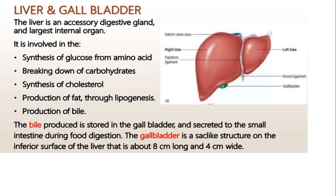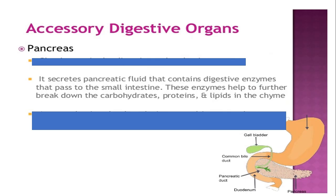Liver and gallbladder are called accessory digestive glands. The liver is the largest internal organ. The liver produces bile or bile juice, which is stored in the gallbladder. Bile acts upon fats - it helps break down fats. Another accessory digestive organ is the pancreas, which produces or secretes pancreatic juice or fluid. Pancreatic juice also contains digestive enzymes responsible for breaking down complex food materials into simpler ones, which pass to the small intestine.